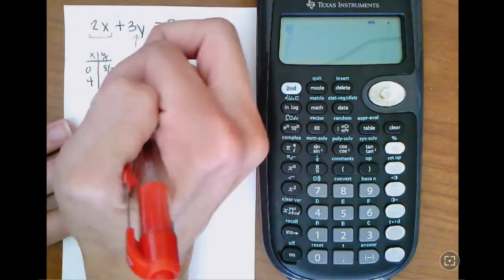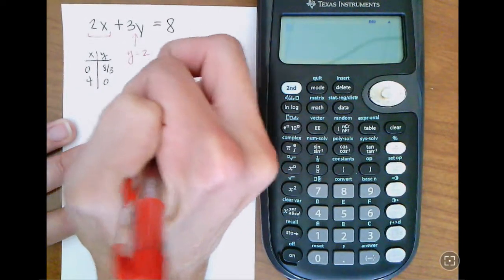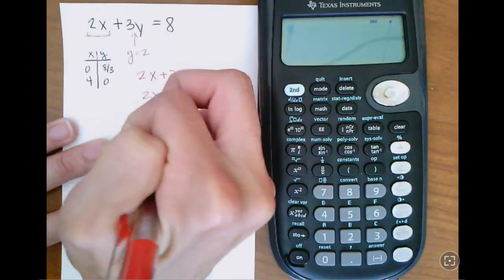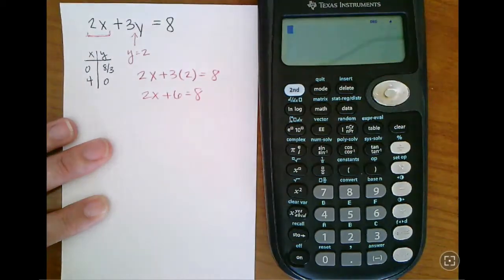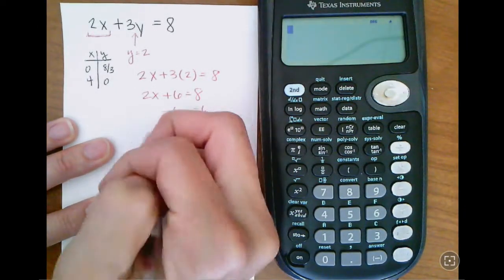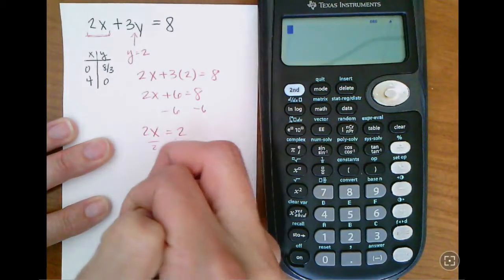So I'd want to plug in something like y equals 2. And then I have 2x plus 3 times 2 equals 8, so 2x plus 6 equals 8, 2x equals 2, and x equals 1.